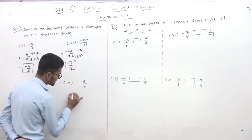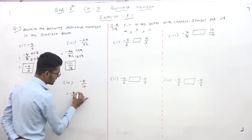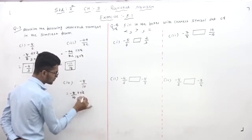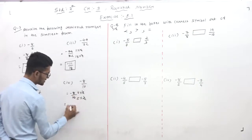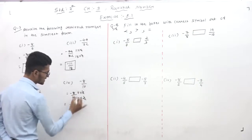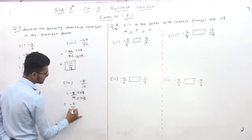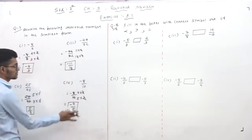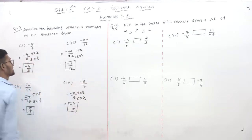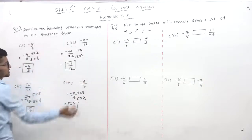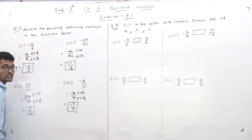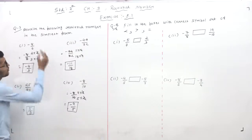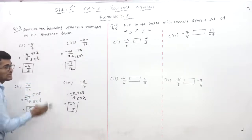Now the next one: minus 8 by 10. Here 8 is 4 times 2 and 10 is 5 times 2. We cut by 2, giving minus 4 by 5. So minus 4 by 5 is the simplest form of minus 8 by 10. This completes the simplest form questions — now you understand how to find the simplest form of a given rational number.